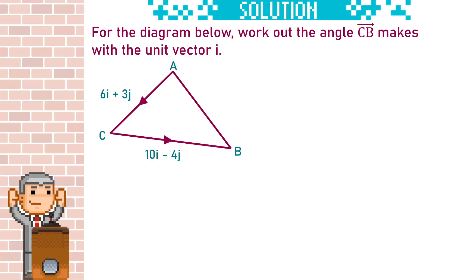The i direction will be horizontal from C. Let's draw this in its own diagram to make things a bit clearer. We can add the i and the j components separately. We notice that we have a right angle triangle with two lengths given and an angle to find. Time for some trigonometry.